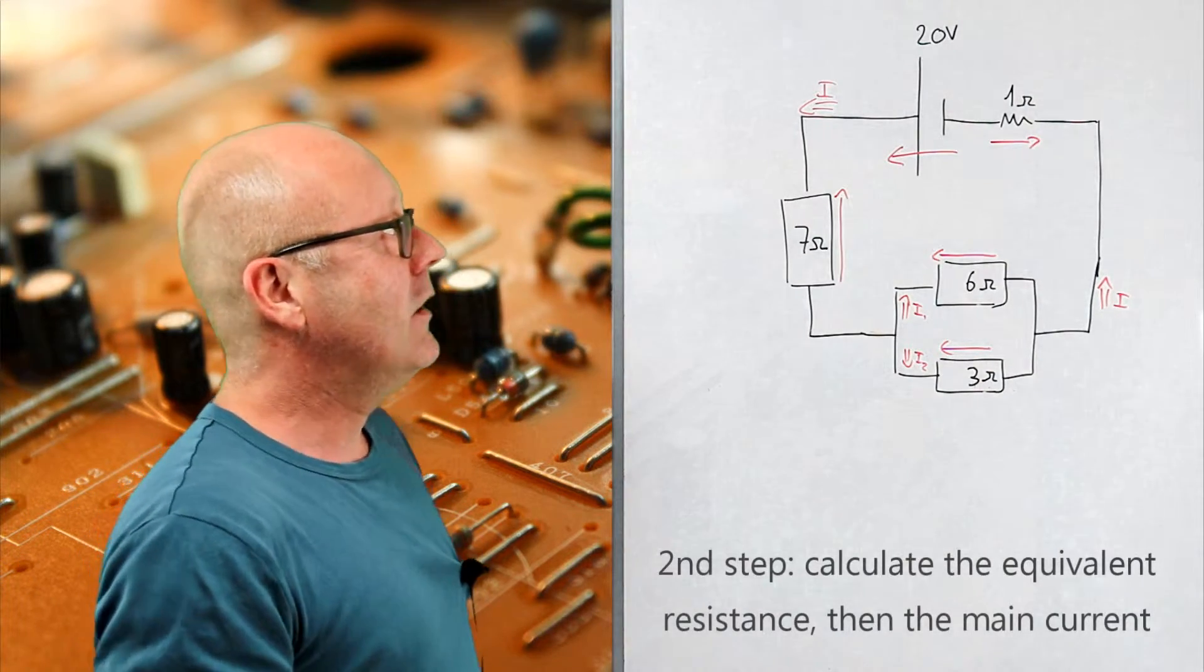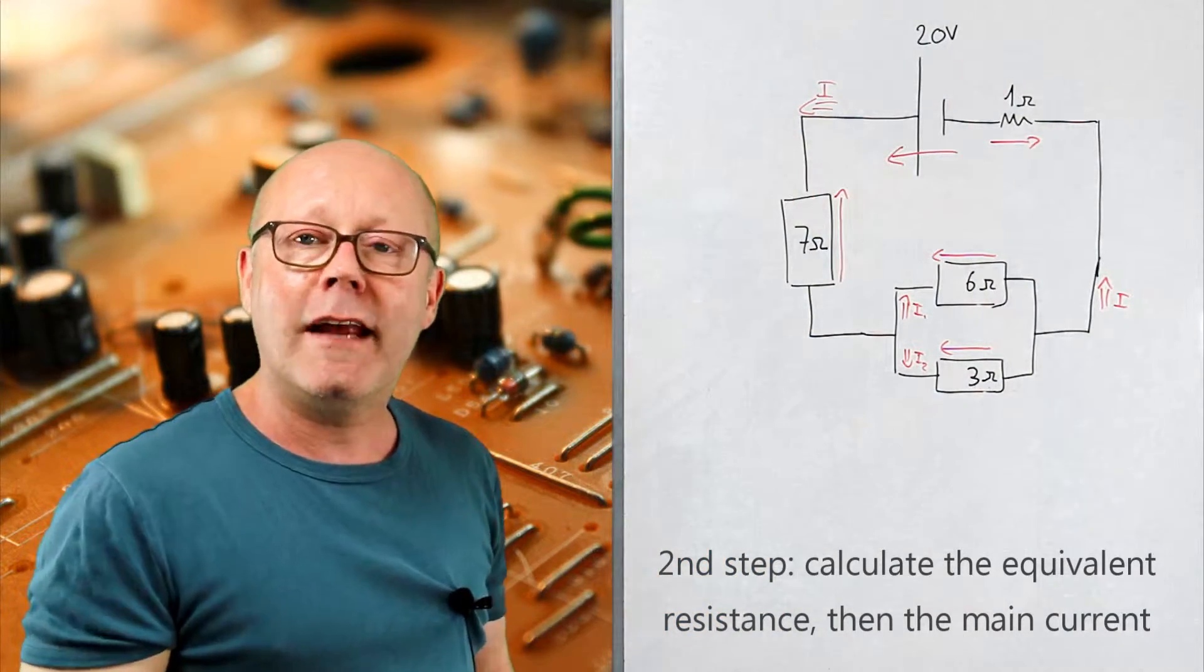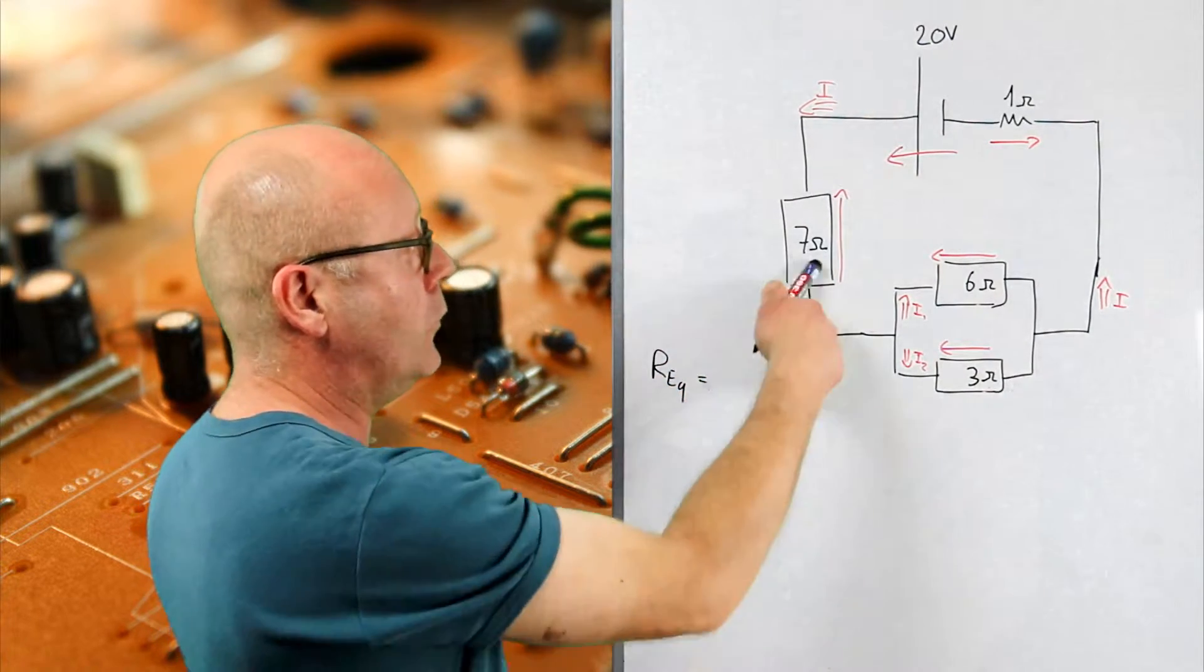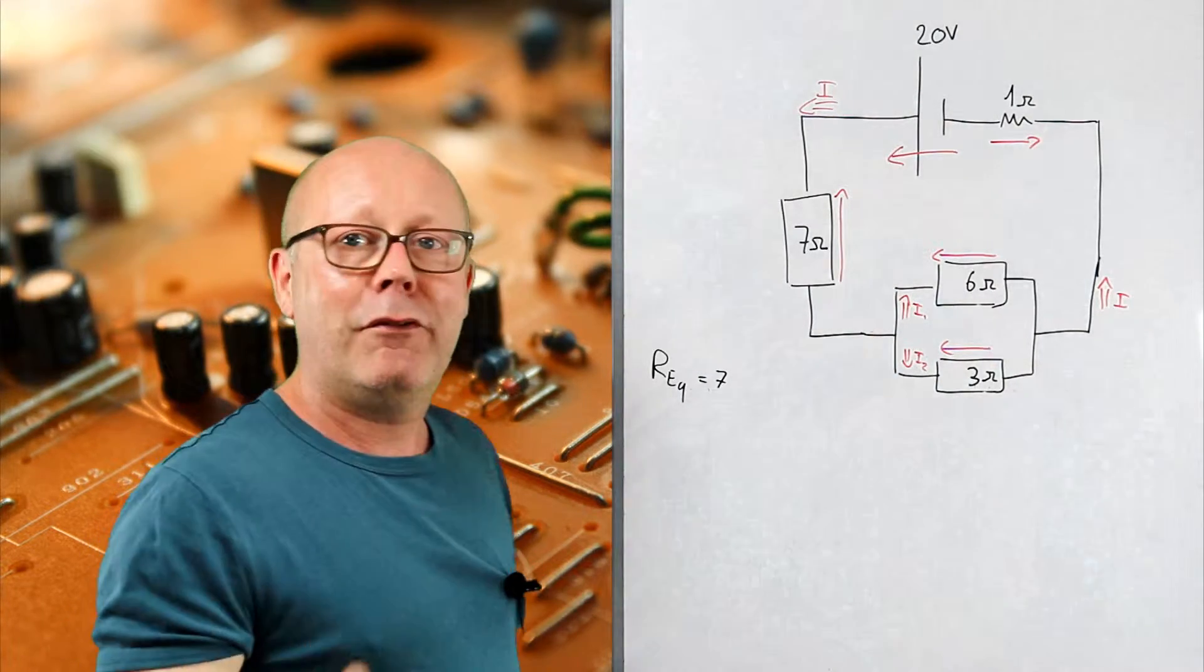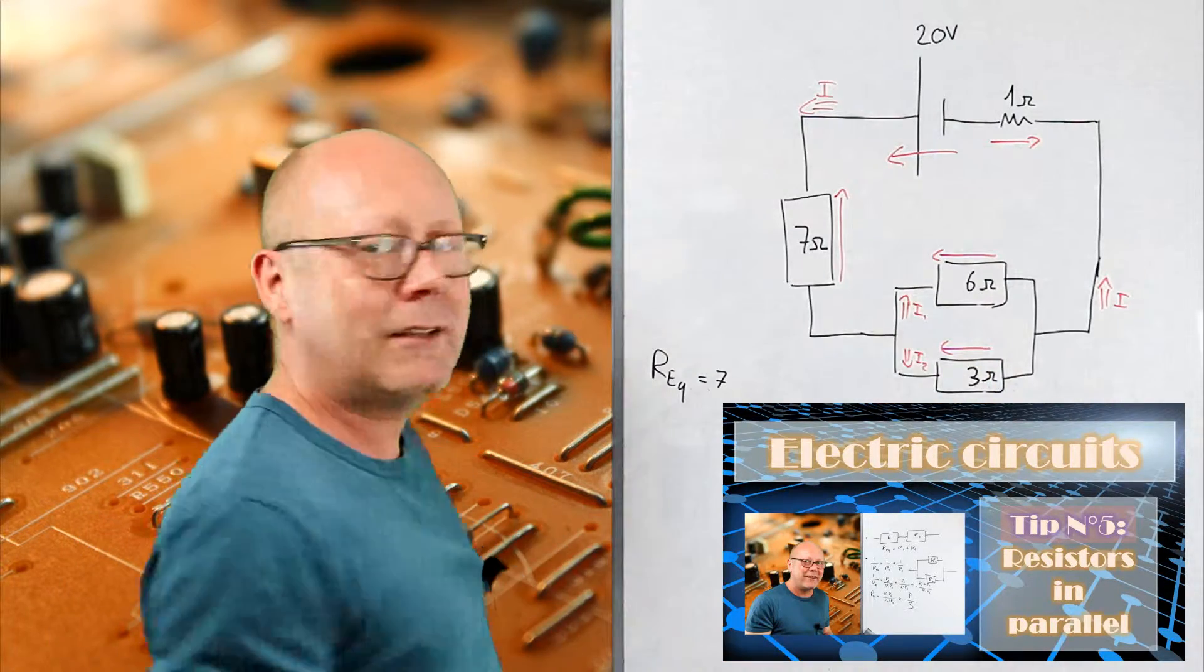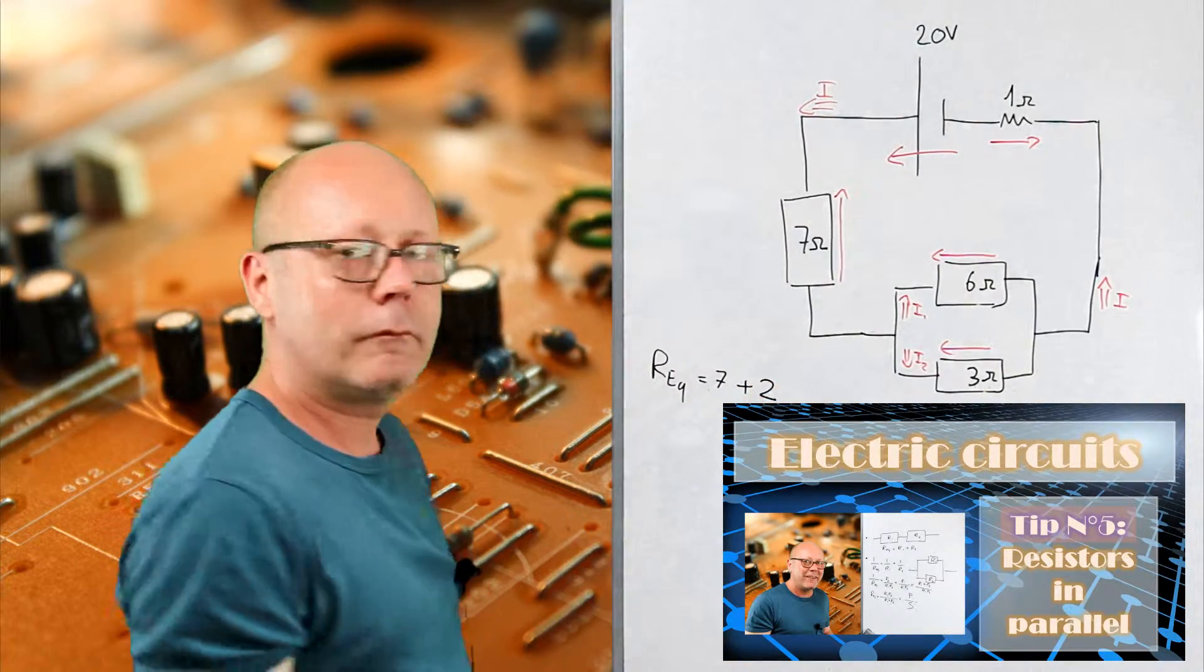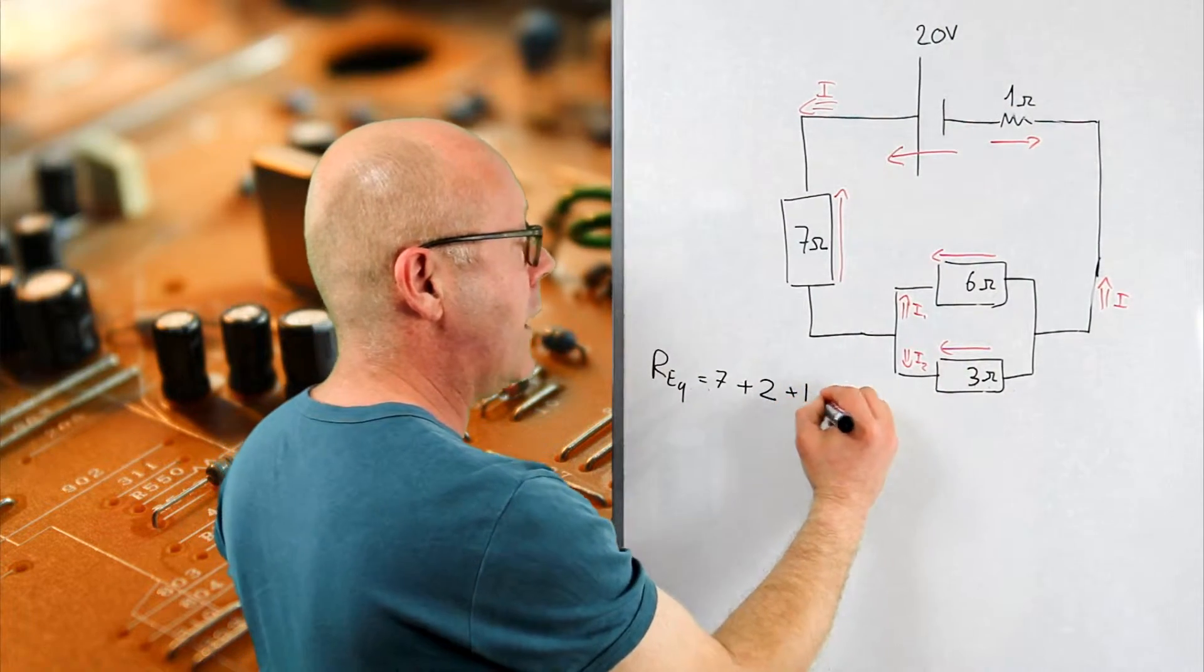The second step is to try to find the main current I. For that you have to calculate the equivalent resistance. So let's do that. The equivalent resistance is equal to 7 plus these two resistances in parallel. So if you have seen the other video I did about the tips and tricks about circuits, well you just do product by sum. So it's 6 by 3, 18 divided by 6 plus 3, 9, so that gives you 2. And then you just add this one plus one, so you have 10 ohms.